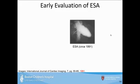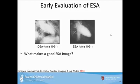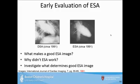Looking back at the 1990s literature, in a 1991 experiment on a dog's heart using IV injection and dual energy, the ESA image showed a pretty decent result with the heart structure visible. The corresponding DSA image showed severe motion artifacts — you couldn't even make out the heart. Despite ESA looking better in that case, it was never adopted into clinical practice. This raised the key question: what makes a good DSA or dual energy image, and why didn't ESA work in the past? Was it a physical or technical issue?